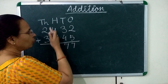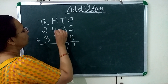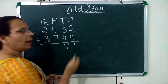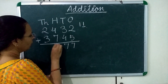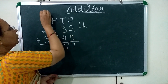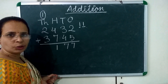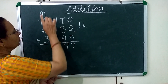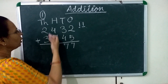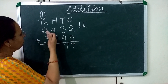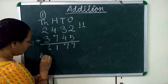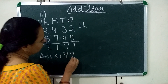Now we move to the 100's place. We will add 4 plus 7, which is 11. We write 1 at the 100's place and carry 1 over to the 1000's place. The 1000's place numbers are 1, 2, and 3. 1 plus 2 is 3, and 3 plus 3 is 6. So our answer is 6,177.